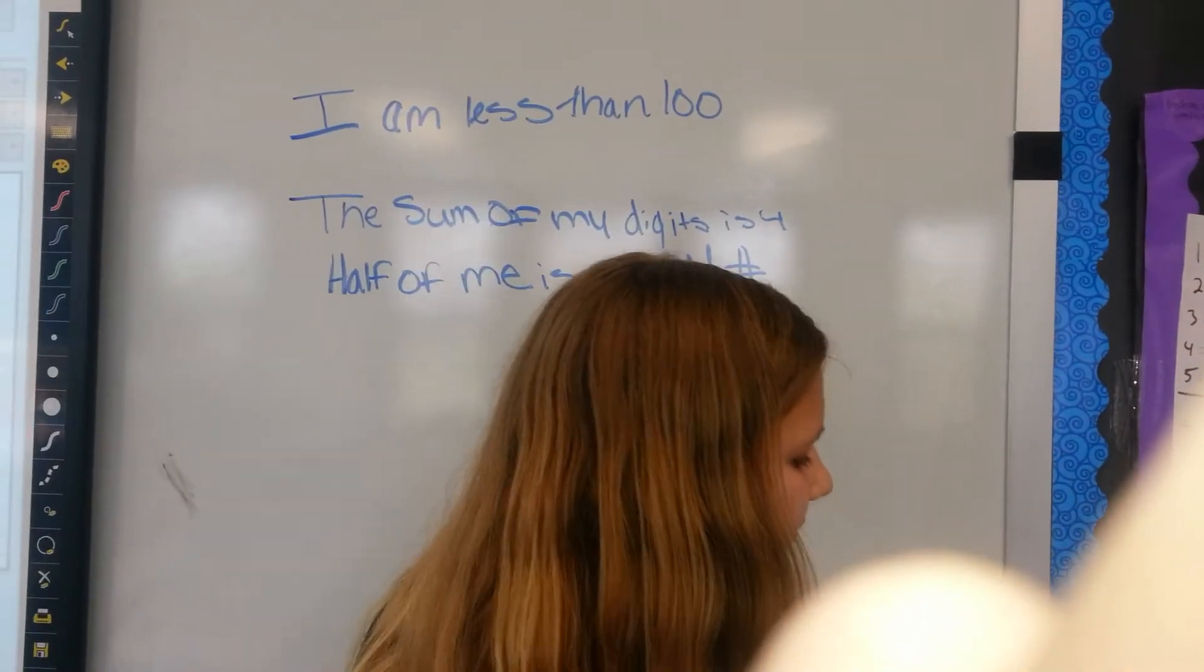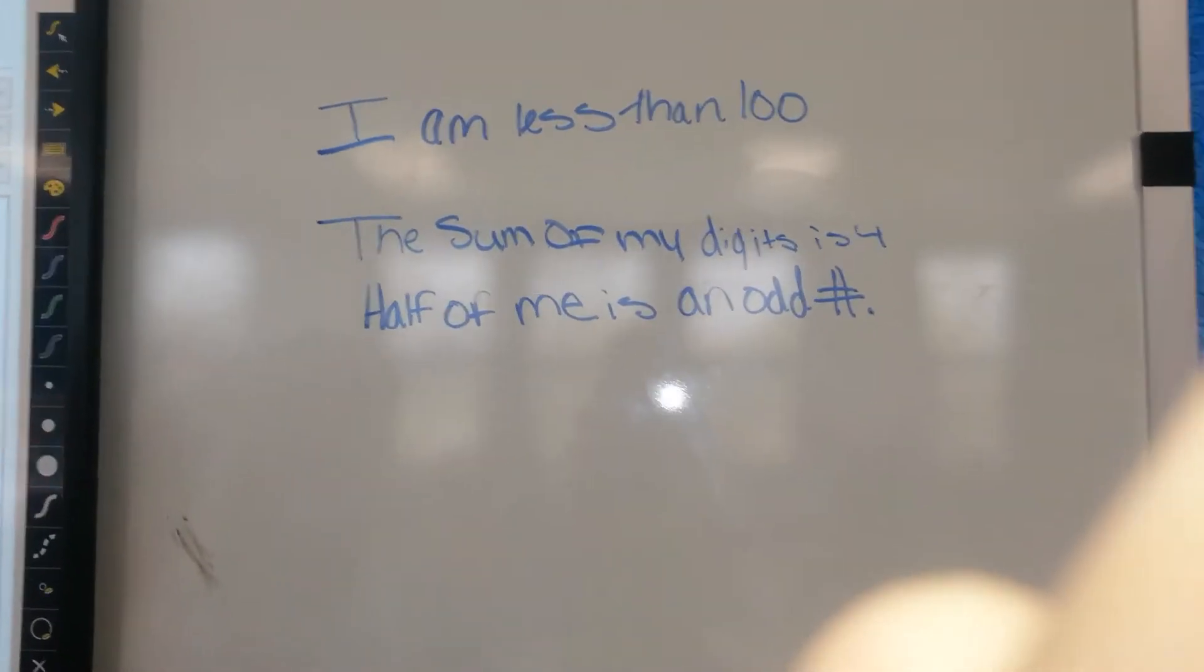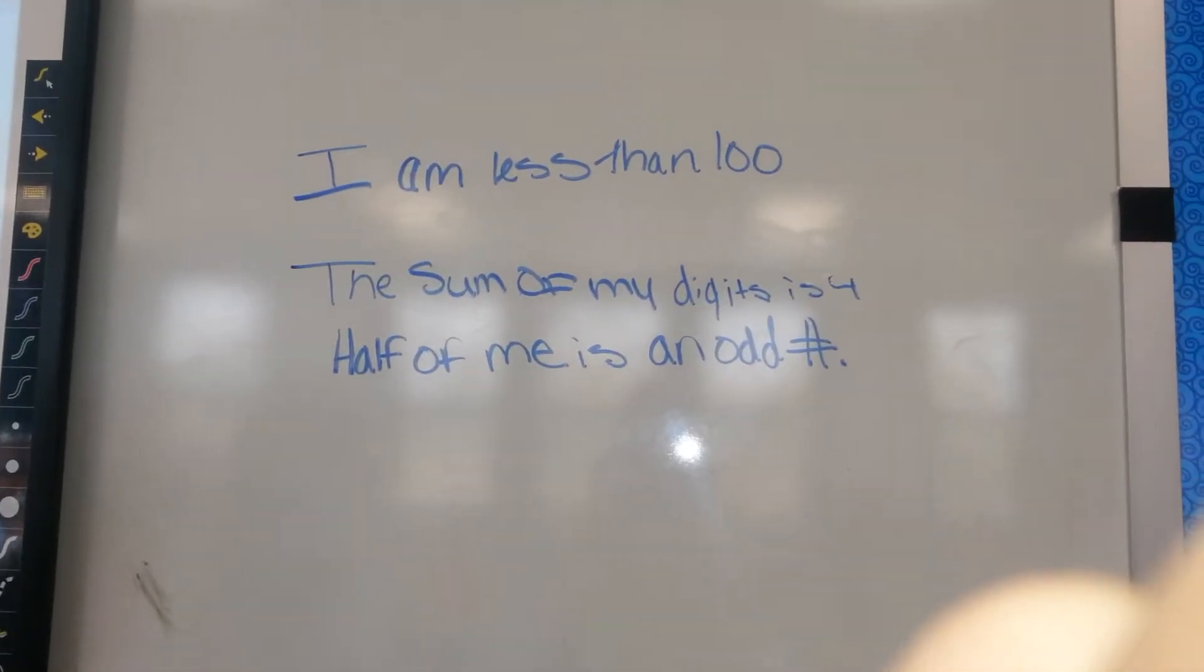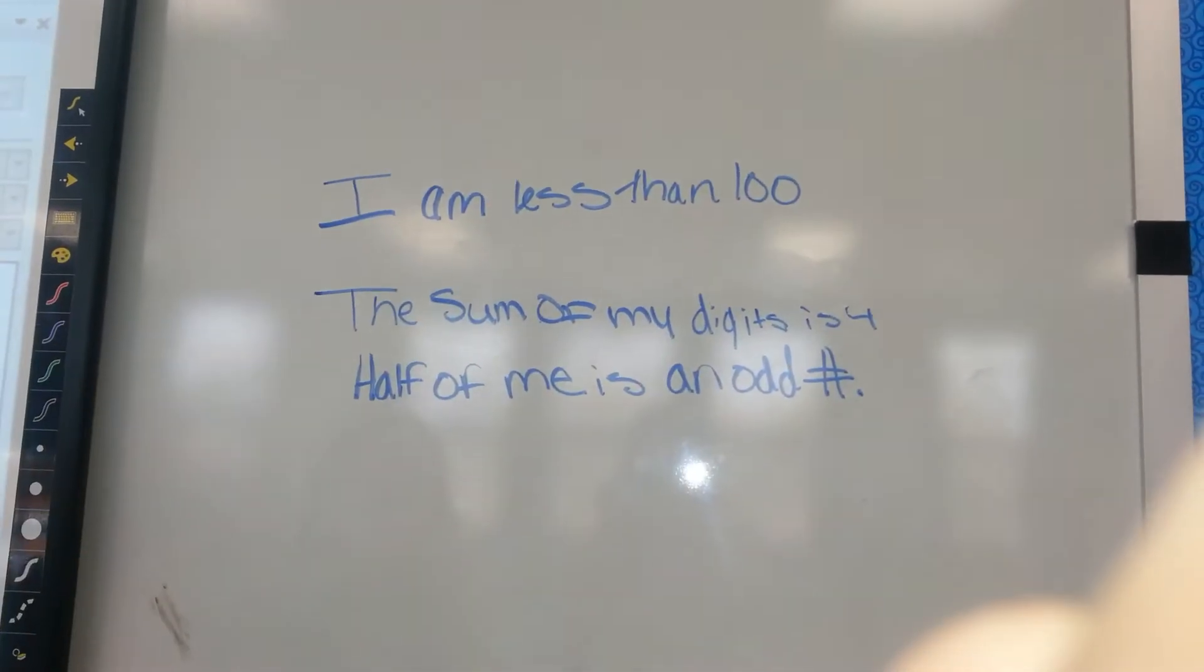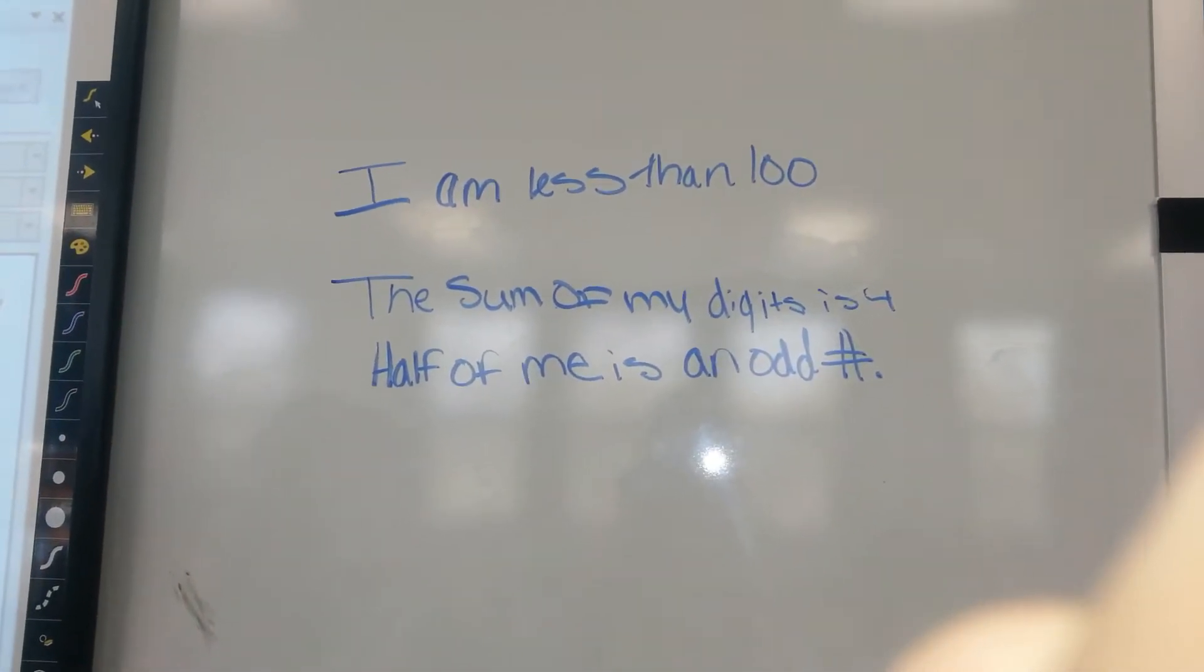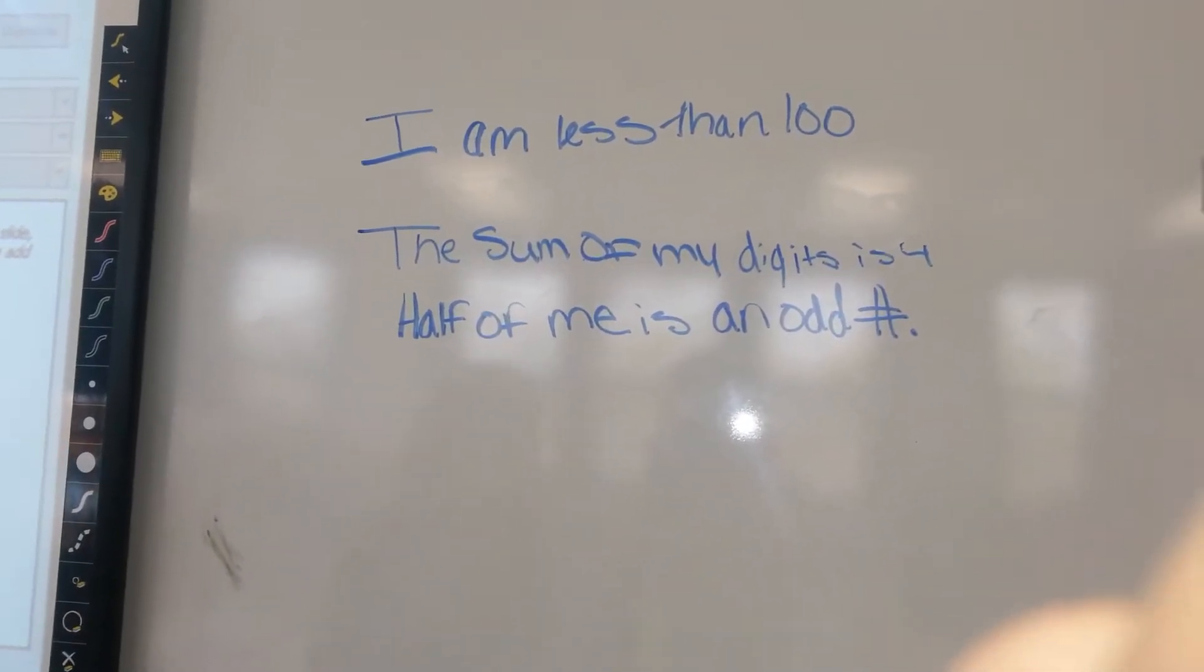The question is, I am a whole number. Use the clues to figure out what number I am. So the first clue is, I am less than 100, so basically you know that it's less than 100. And then it says the sum of my digits is 4.